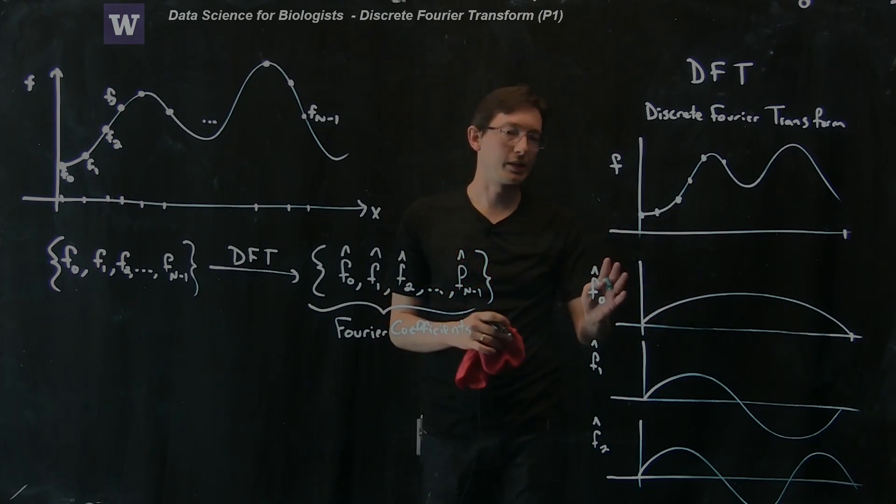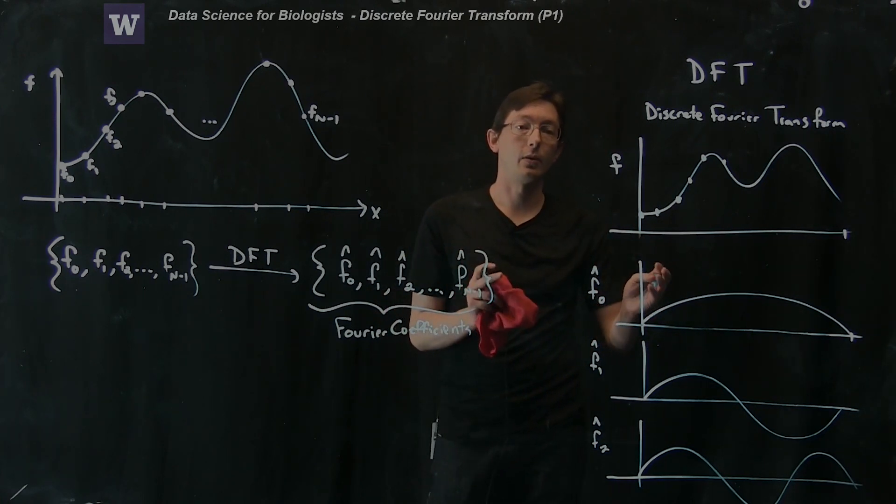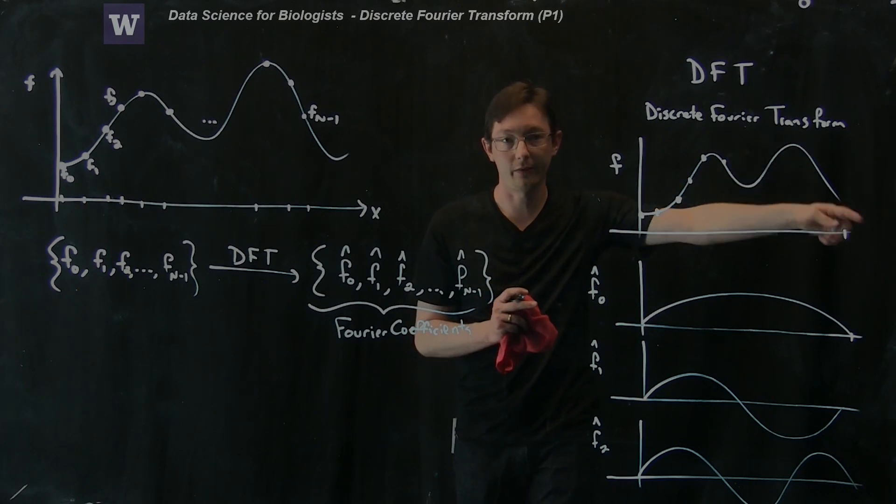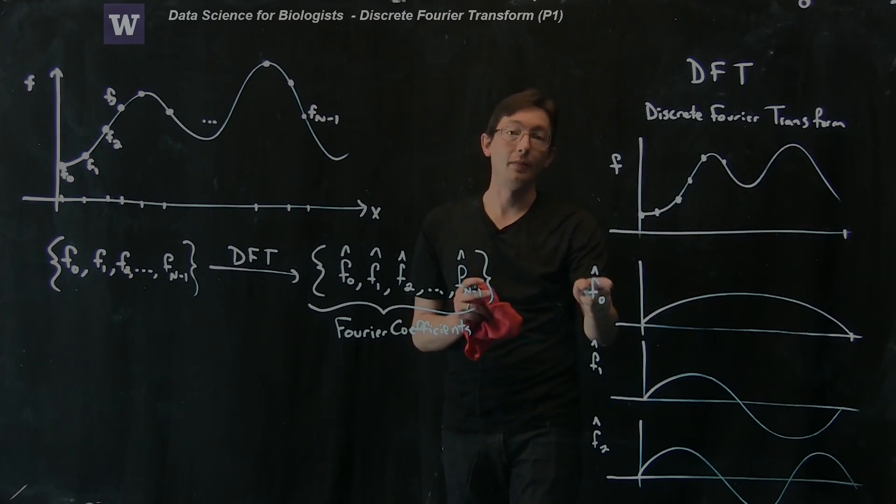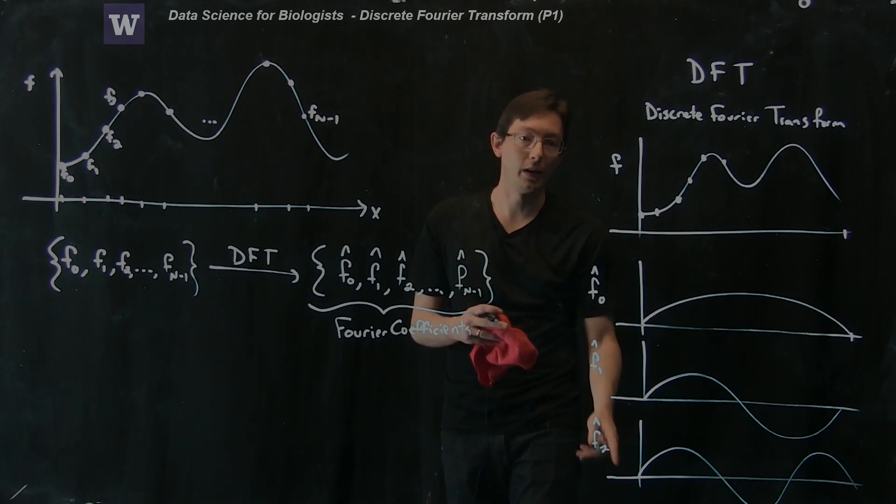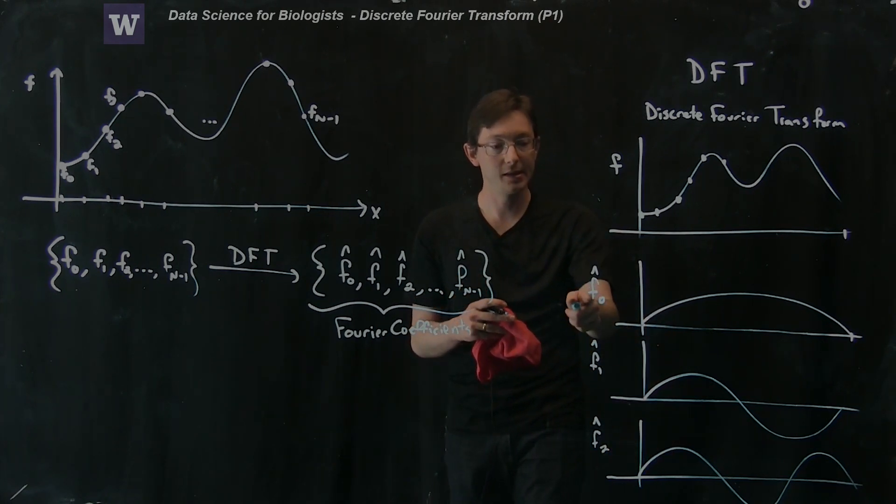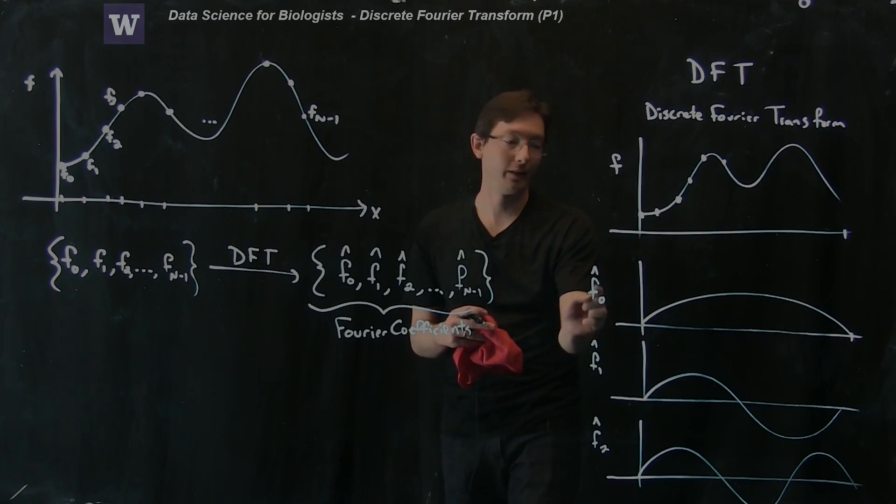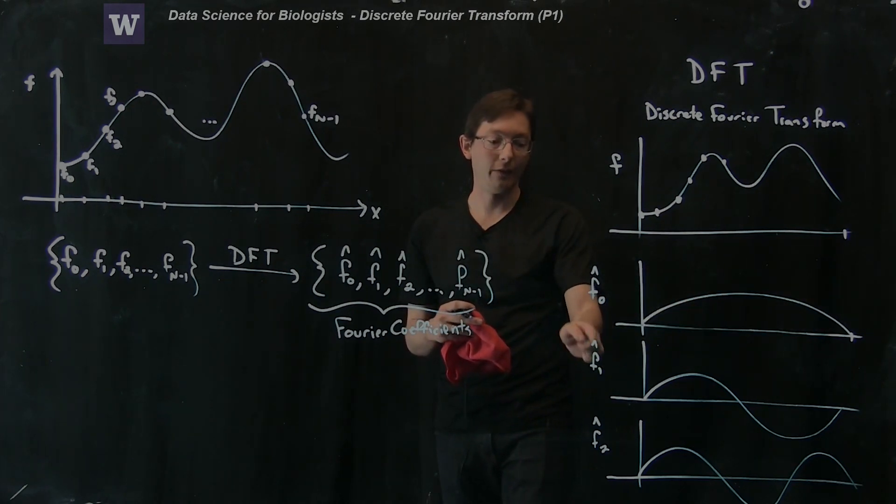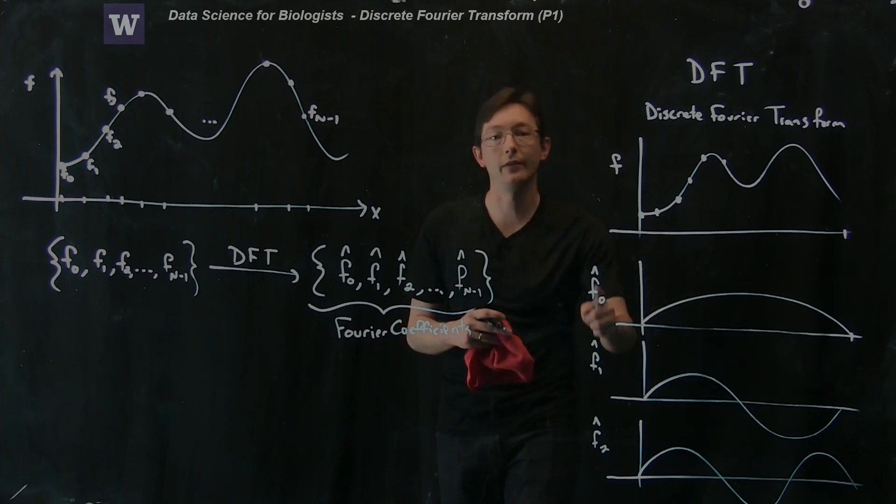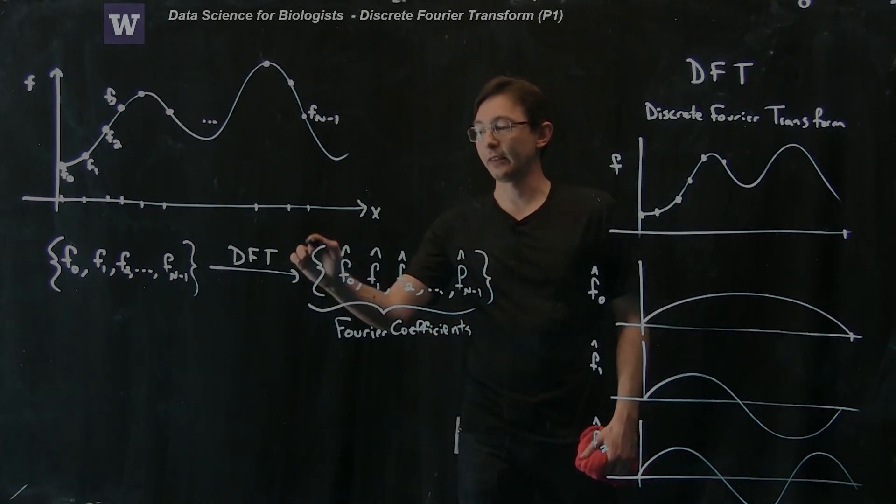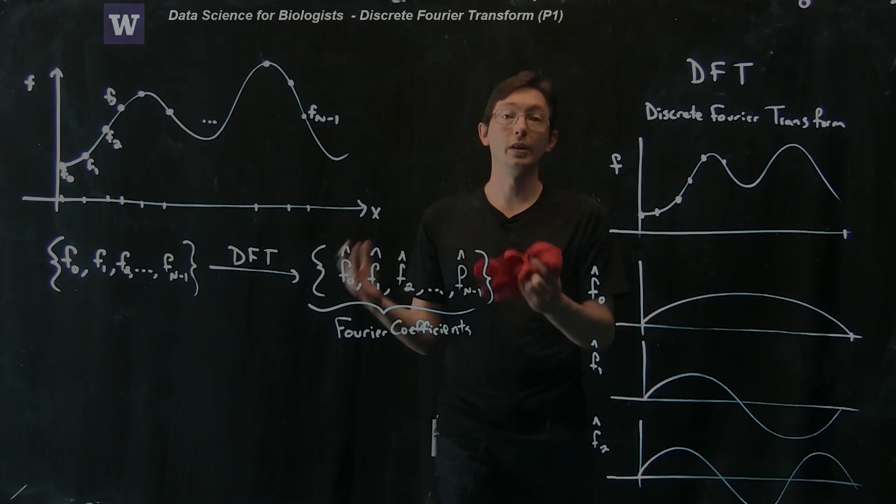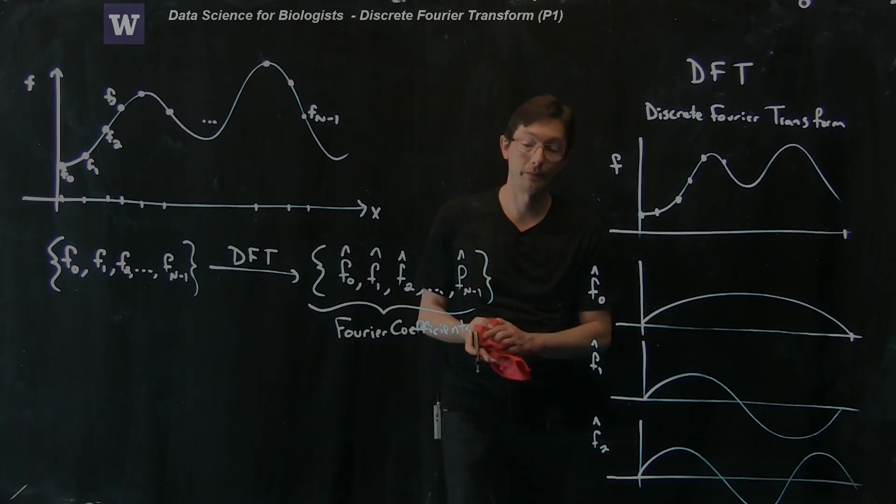So this isn't 100% precise, but this is kind of the cartoon sketch of what we're doing. We have data points for a function. We're sampling at n points. And so we're going to add up n different sine waves of higher and higher frequencies. And we're going to add them up in these mixtures, in these amounts. So f0 hat of the first sine wave, f1 hat of the second sine wave, and so on and so forth. And so the trick is going to be, how do we get these Fourier coefficients? What can we use them for? Why are they interesting?